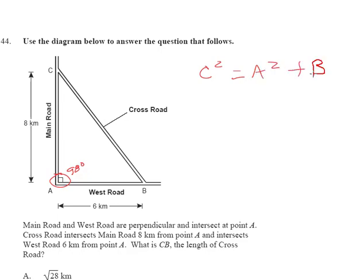Now I wouldn't just start solving this thing without reading the question. So let's go ahead and do that. It says main road and west road are perpendicular and intersect at point A. Crossroad intersects main road 8 kilometers from point A and intersects west road 6 kilometers from point A. What is CB, the length of the crossroad?